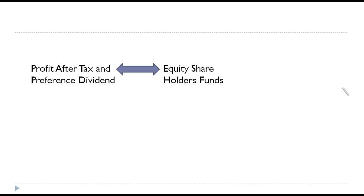This ratio focuses specifically on equity shareholders, who are the real owners of the company. From the profit after tax, preference dividend must first be paid. Only the profit remaining after paying the preference dividend is available for equity shareholders. That is why profit after tax minus preference dividend is compared with equity shareholder funds.